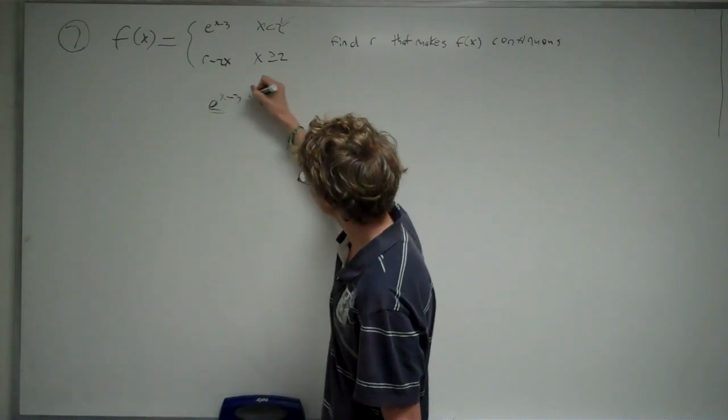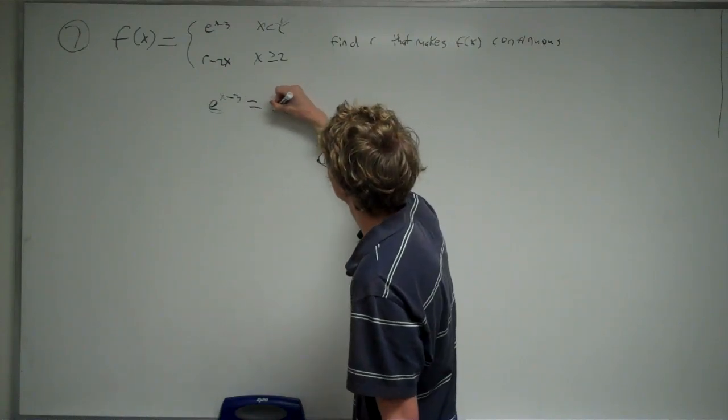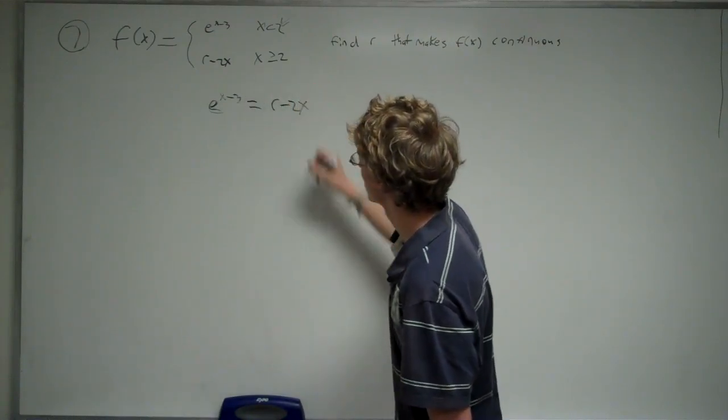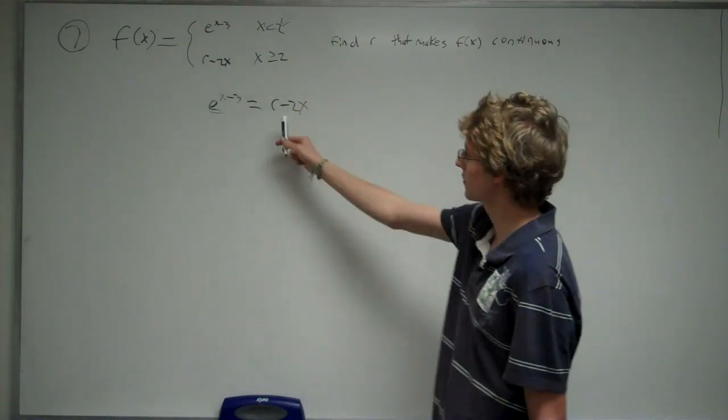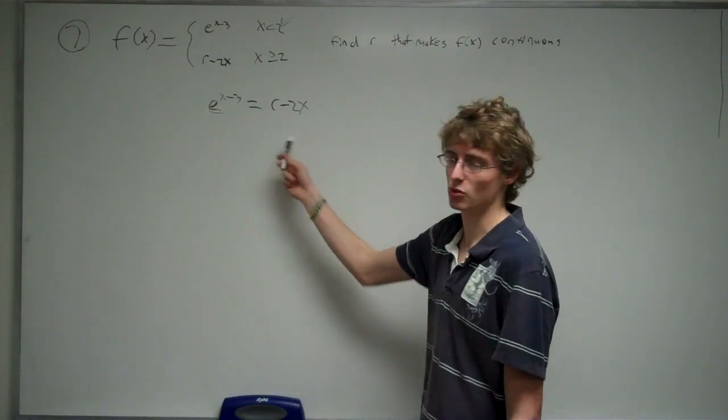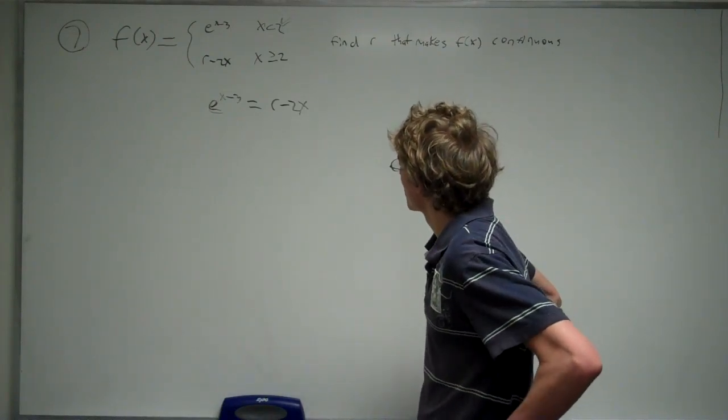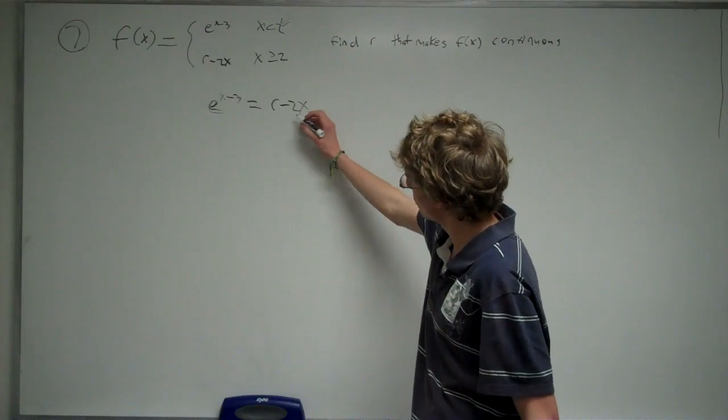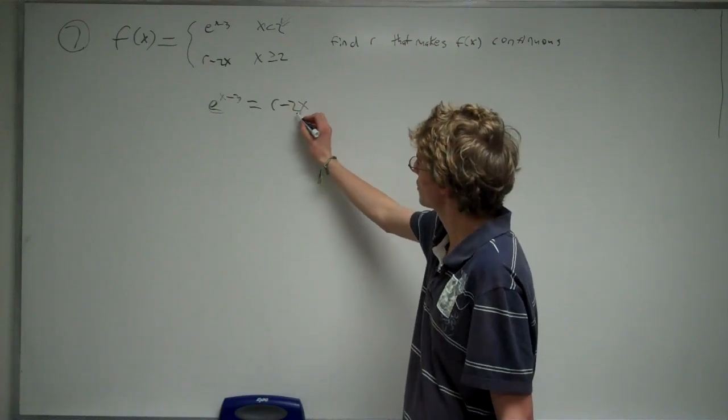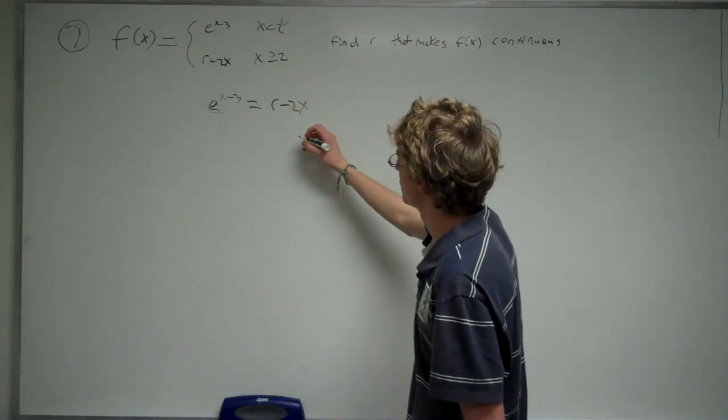So you've got e to the x minus three equals r minus two x. And you're trying to find the value r that would make these two equations equal each other. So first thing you're going to do is you're going to isolate r on one side, so you're going to add two x over to the other side.